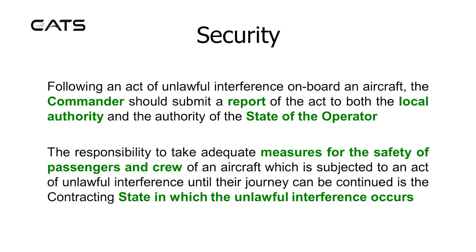The responsibility to take adequate measures for the safety of passengers and crew of an aircraft which is subjected to an act of unlawful interference, until their journey can be continued, is to the contracting state in which the unlawful interference occurs.